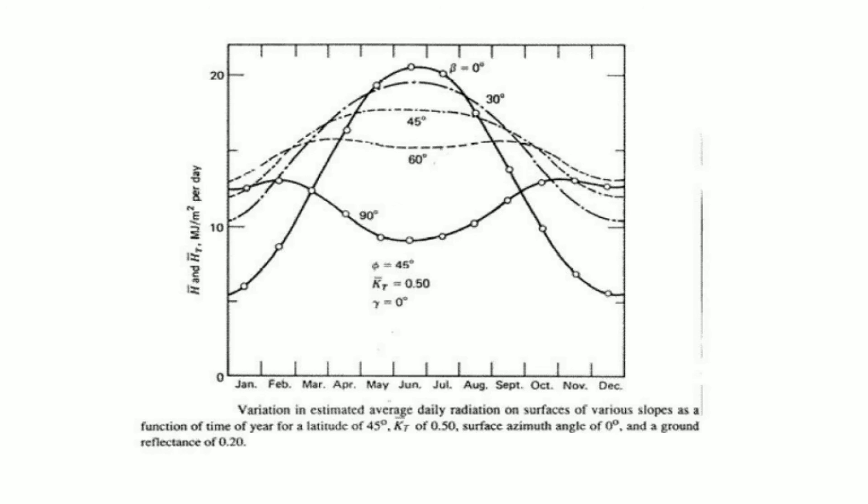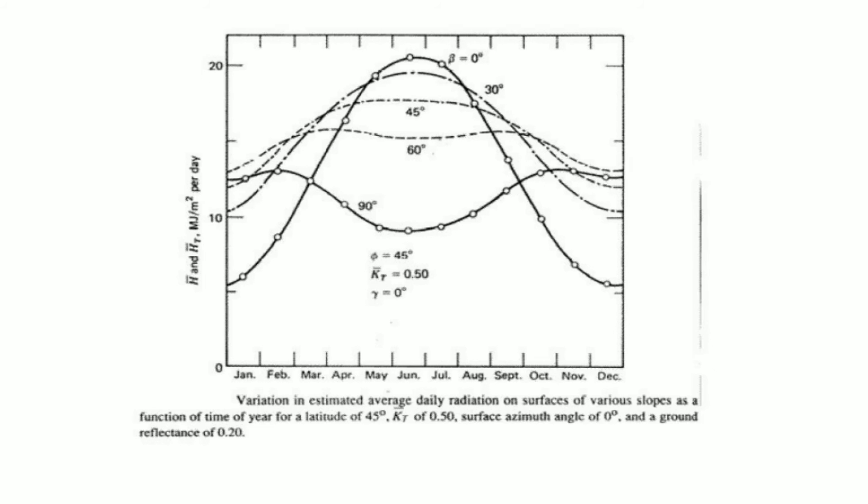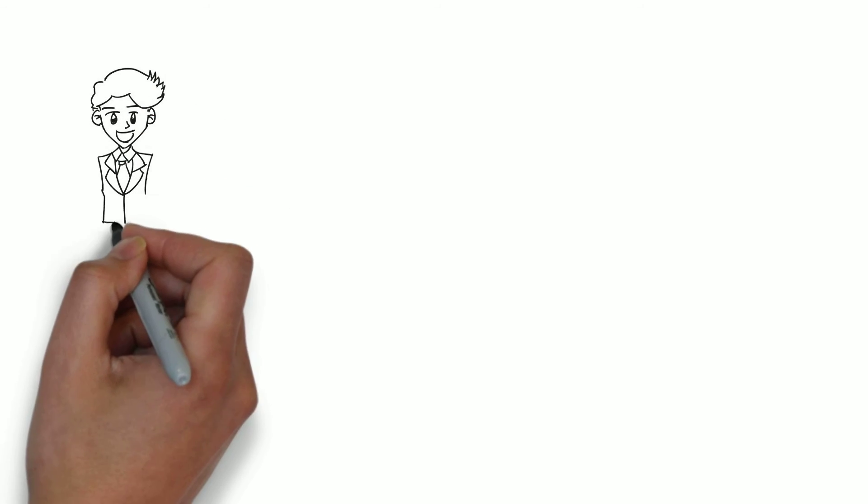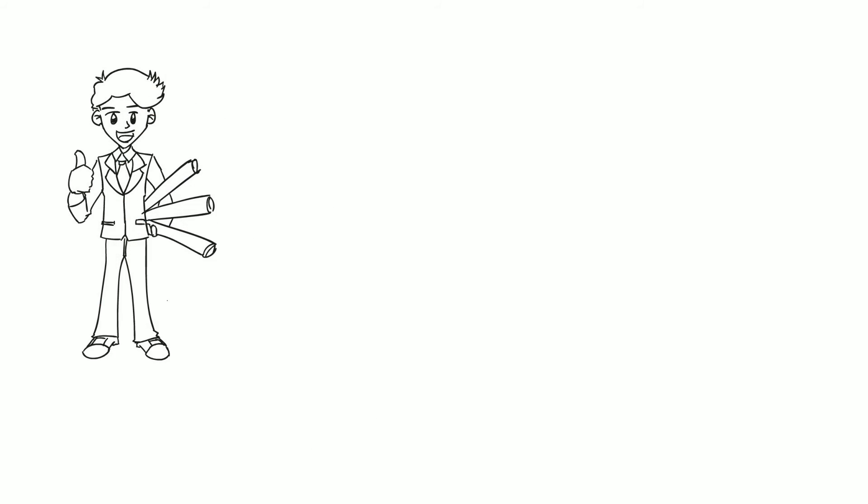So for all fixed tilt receivers, the correct angle of installation is basically the angle at which the sun rays for that particular location are perpendicular to the panel for most time during the year.